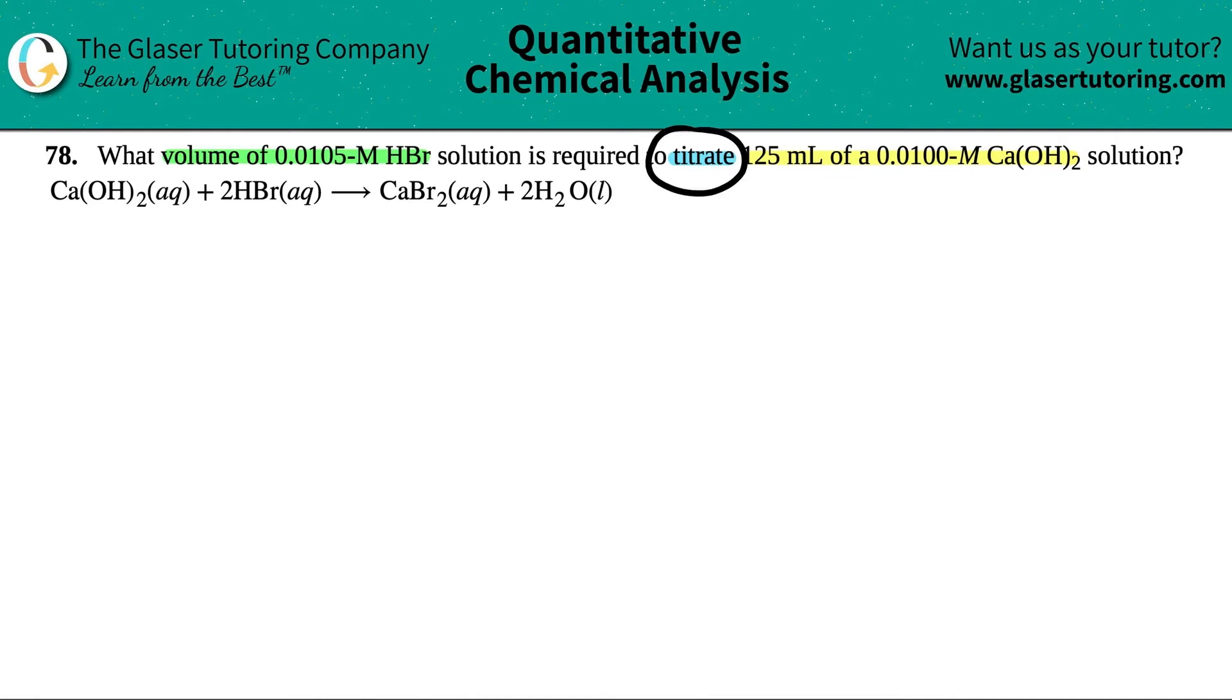Now, I love titration problems, especially when I know that I'm titrating an acid with the base. And in this case, I do have an acid and I do have a base. We've done tons of problems talking about acids and bases. So if you need a refresher, just go back to the playlist in chapter four. However, we have HBr and I know that HBr is an acid. It's one of our strong acids and calcium hydroxide, Ca(OH)₂ is one of our strong bases.